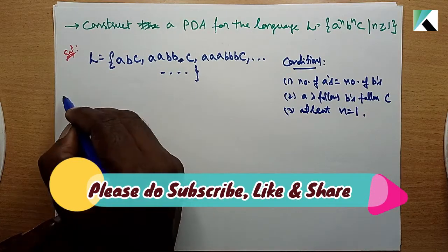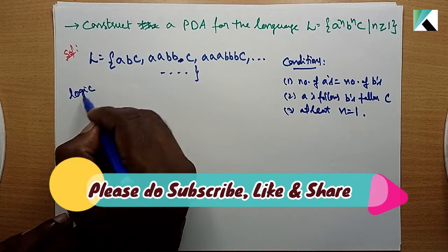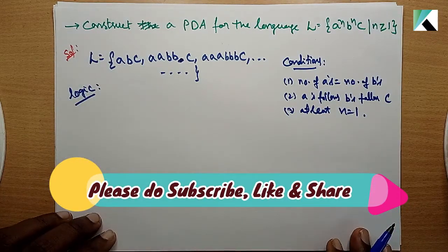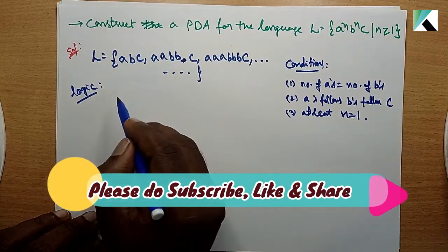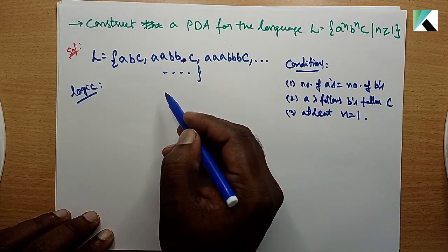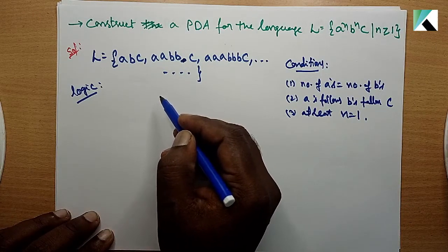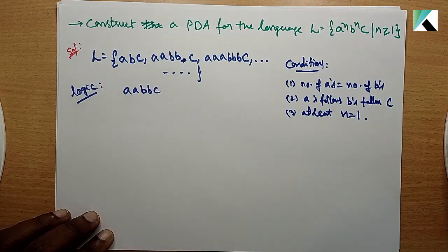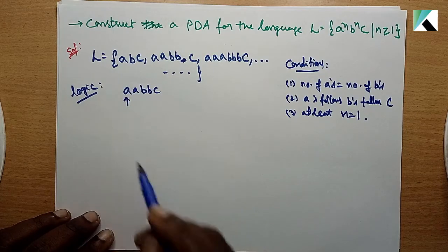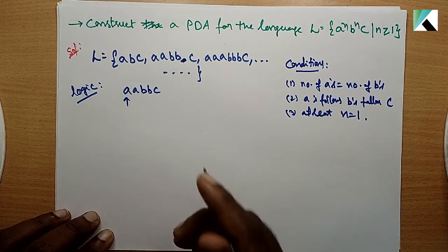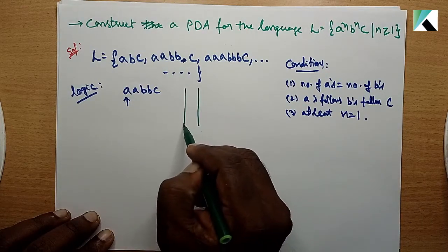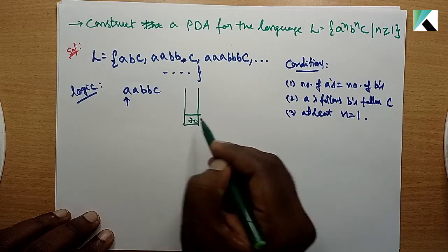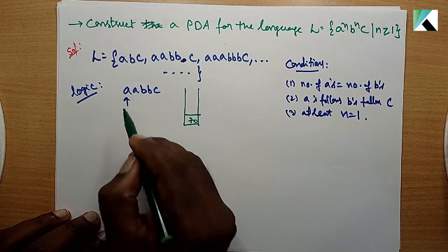Then, what is now? Frame the logic, find the logic. Now I am taking double A, double B, C. I have to point out, now take the stack. The starting symbol is Z naught.